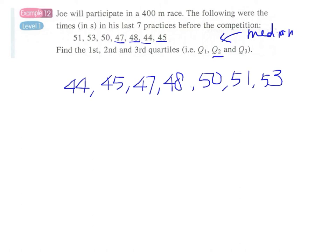That is the data at the middle. Therefore we have one, two, three, four, five, six, seven data. So the middle one will be 48. This is our Q2.